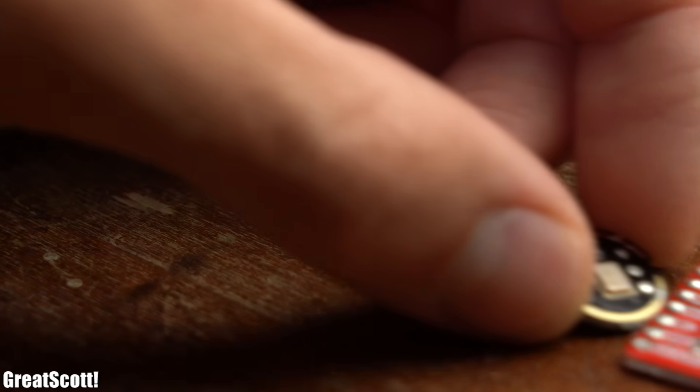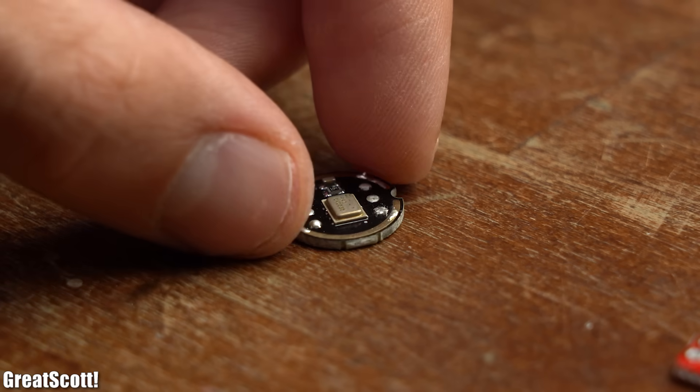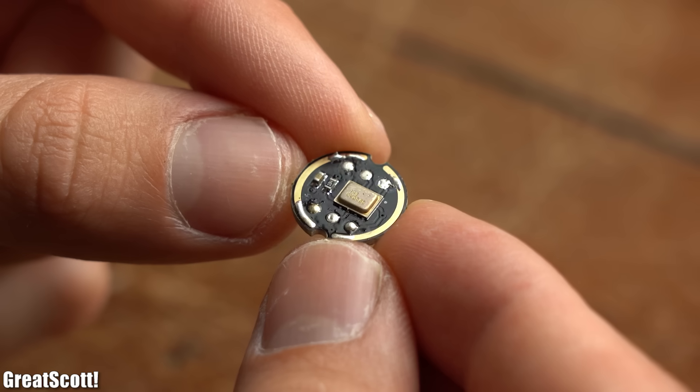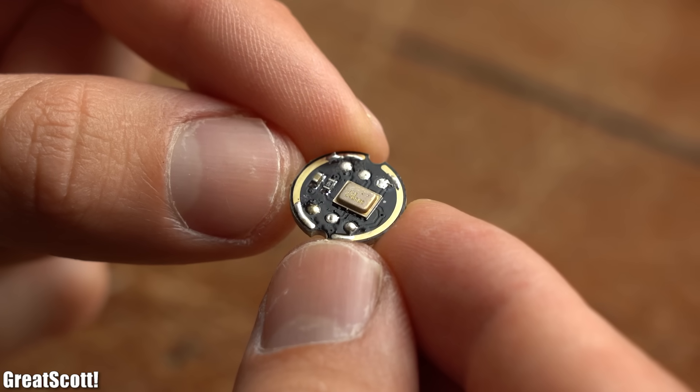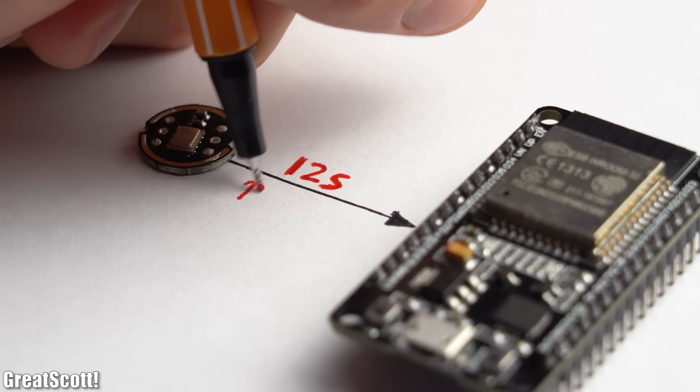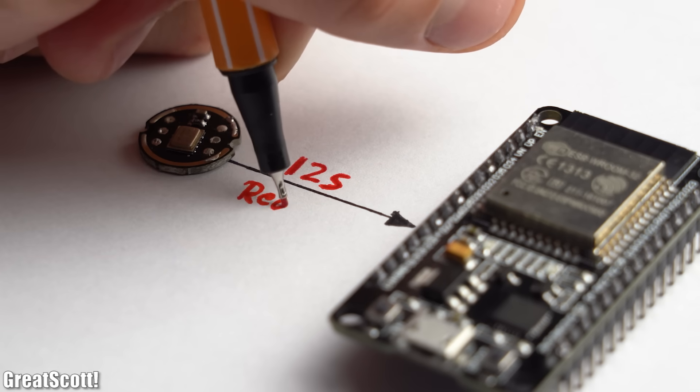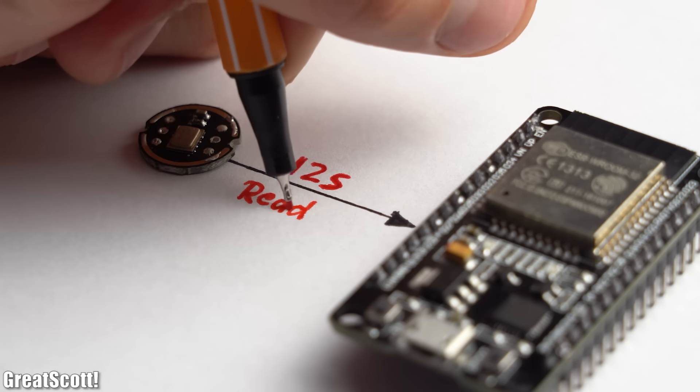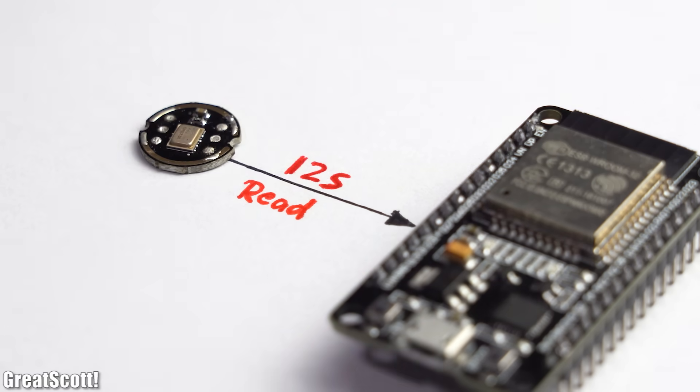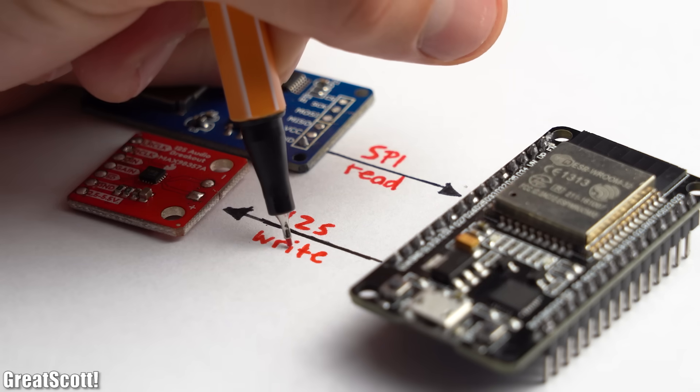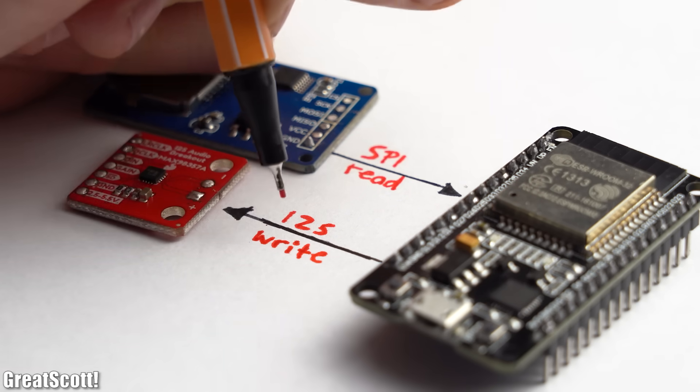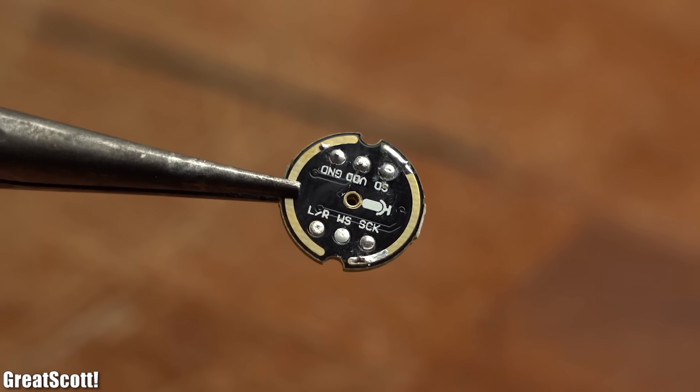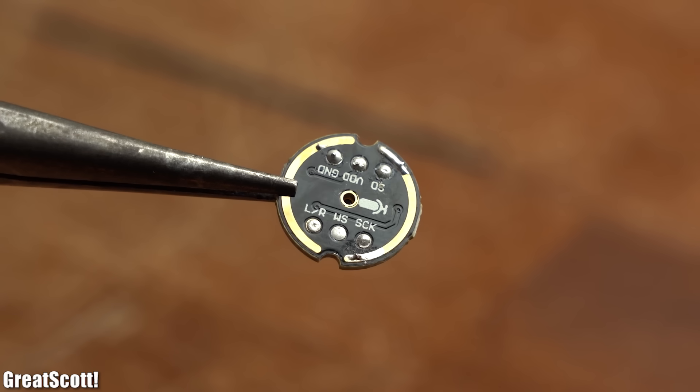For first practical example however let's not start off with the amplifier board, but instead with this INMP441 microphone breakout board. With it the I2S concept will be easier to understand since we only have to read in data with the microphone while we would have to read in data and send out data with the micro SD card and the amplifier board. But anyway the microphone features 6 pins.